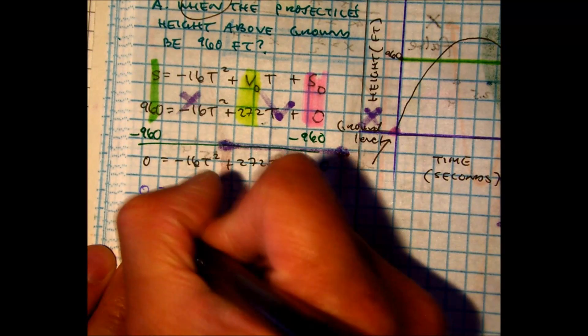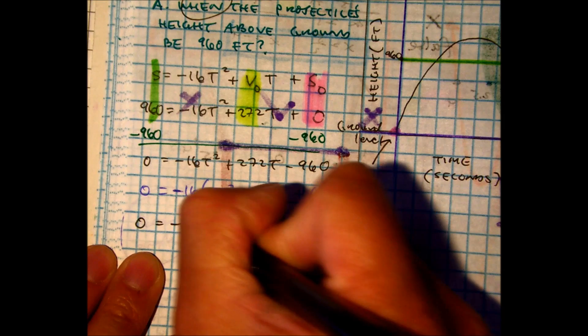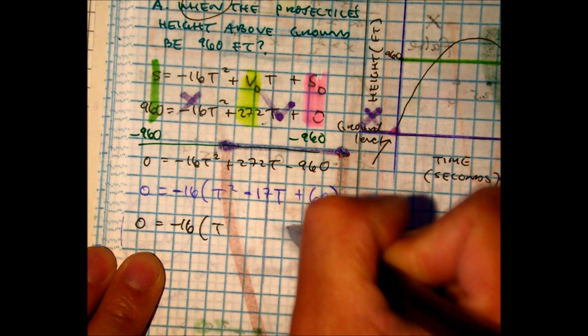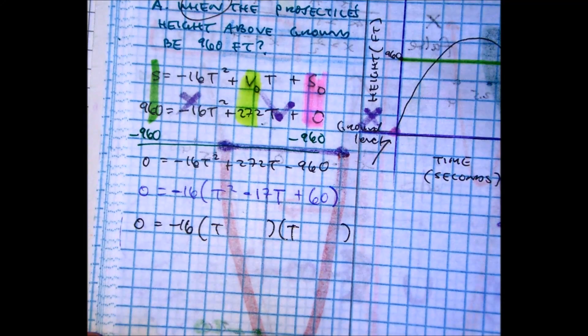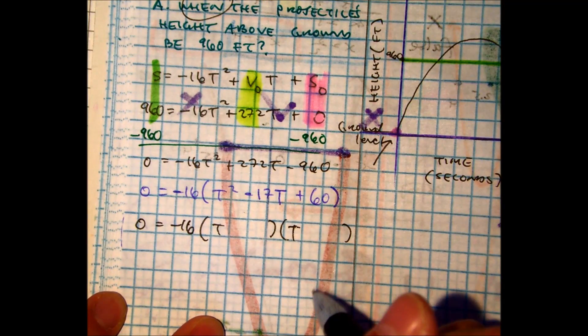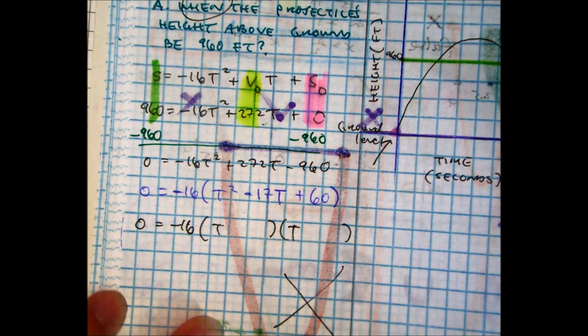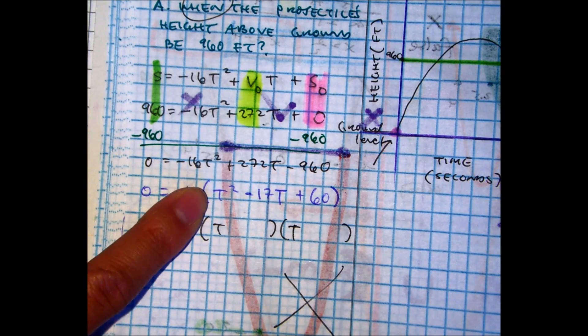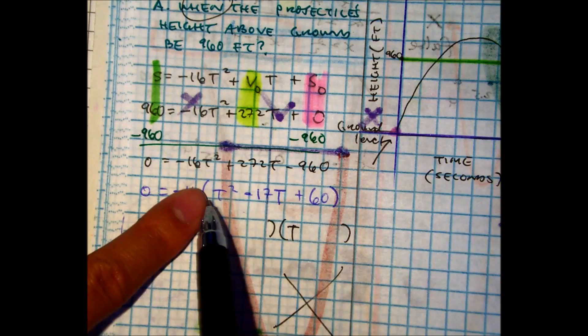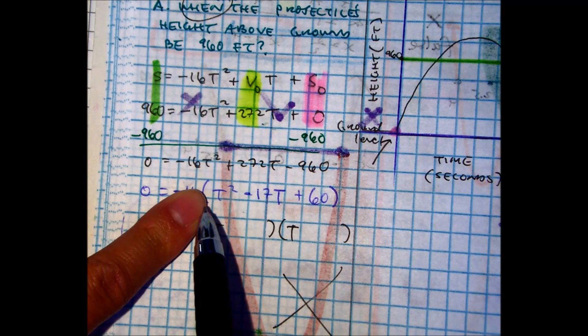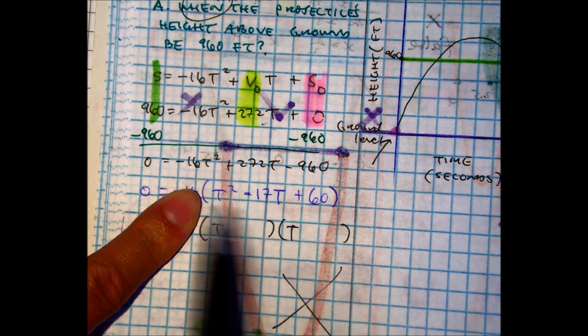And then I'm going to take a shot at factoring. Remember, I only have to use the X method if your A value is equal to 1. Pay attention when you're taking out the greatest common factor. Your A, B, and C is what matters. Everyone say inside. Inside.